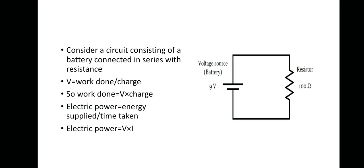We can define electrical power as the rate at which the battery is supplying electrical energy. Power equals energy supplied divided by time taken, which gives V times delta Q divided by delta T. Since delta Q over delta T equals current I, the equation for electrical power is P equals IV — voltage multiplied by current.